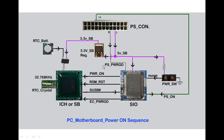When the motherboard is in a no-power state, here is how to troubleshoot it. First, make sure the 5V standby and 3.3V standby voltages are present on the board. Check that the power switch receives 5V or 3.3V standby voltage, and verify that standby voltage is present at the supply pins of the SiO chip, and 3.3V standby is going to the ICH. Also check if the RTC crystal is functioning — this can be tested using a DSO.